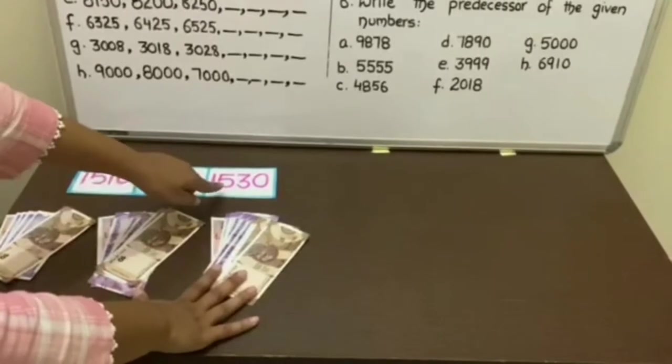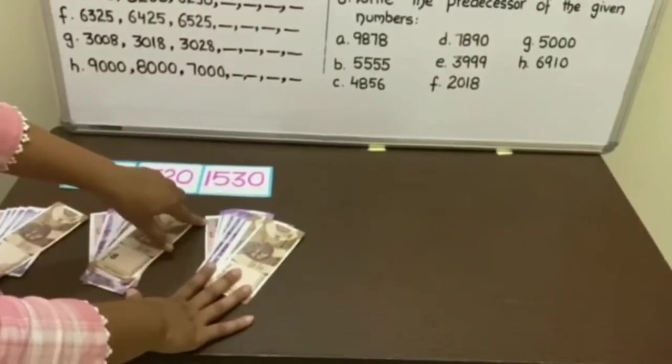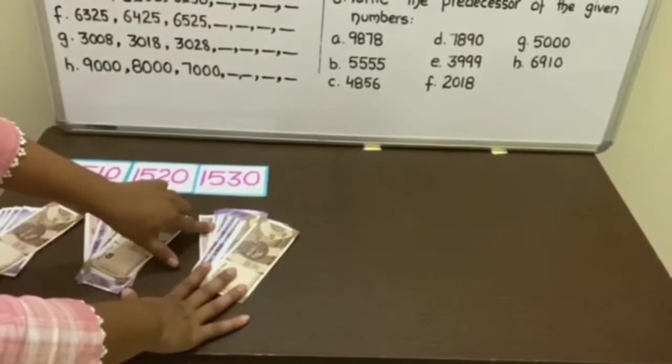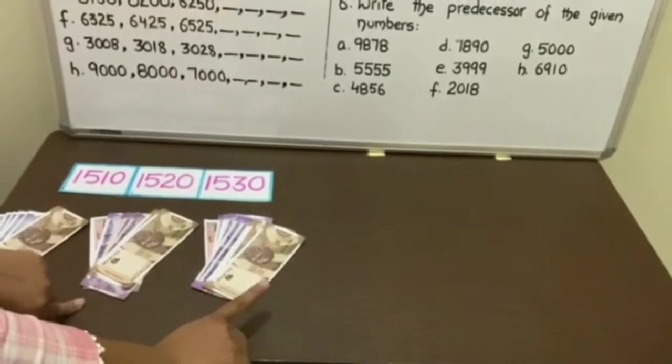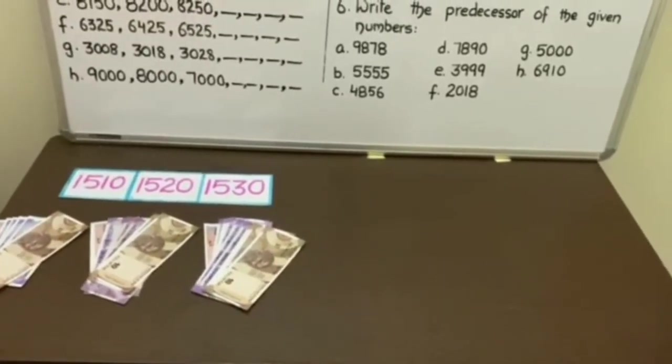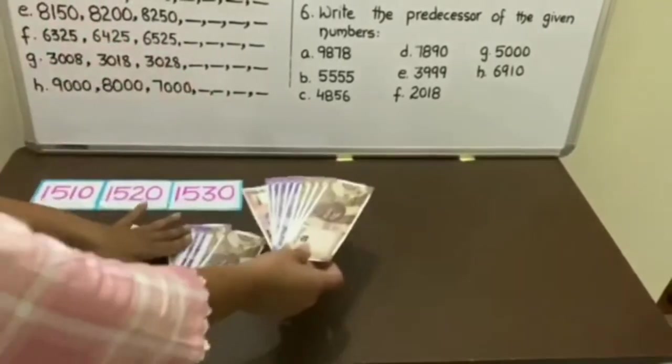Next is 1530 and notes are 1530. We have seen that 1 note of 10 rupee is increasing. So our next number will be 1540.